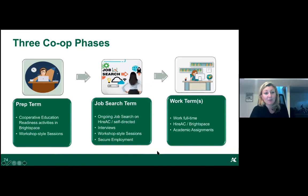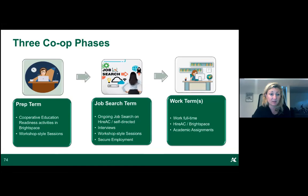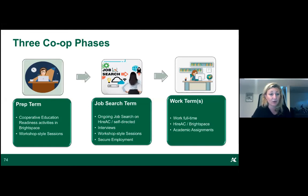There are three phases of co-op. Phase one is the prep term — for one semester while in classes, you'll prepare with resume and cover letter work, and complete a prep course. Phase two is the job search term — the following semester you're actively applying for jobs, either independently or through the co-op database, and doing interviews.